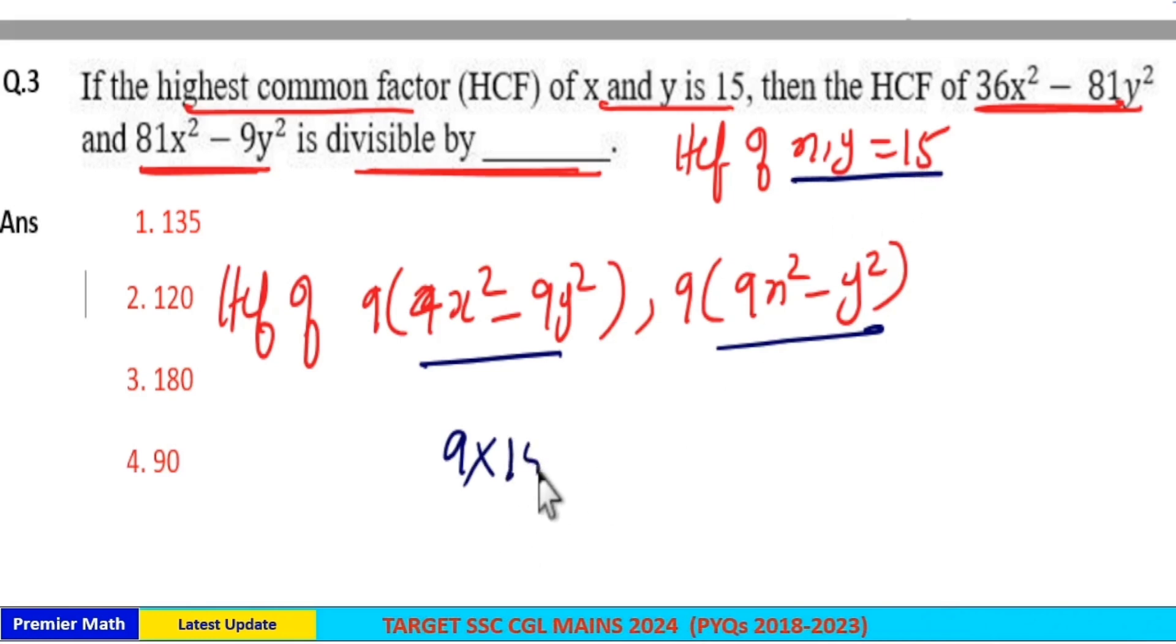So you can take 15 as a common factor from these two terms. You cannot take 15².